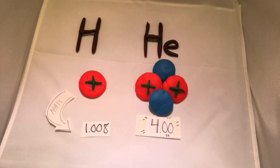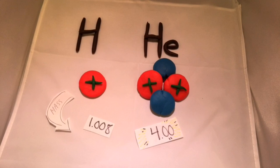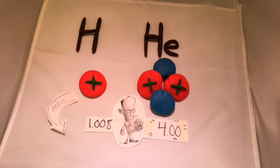So Chadwick proposed that there were neutral particles that have the same mass as protons with a zero charge, which would explain the four-to-one mass ratio of hydrogen and helium, respectively.